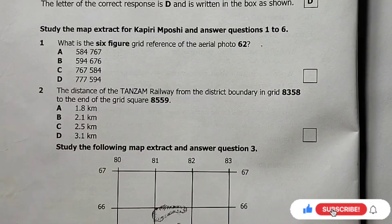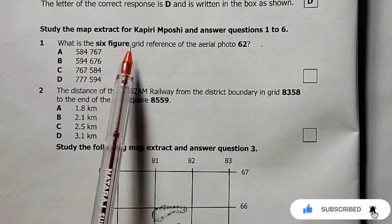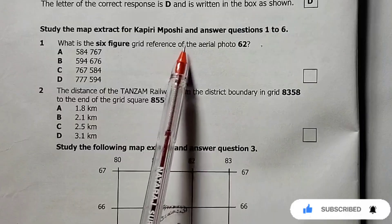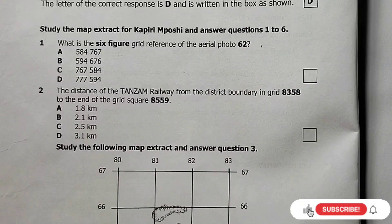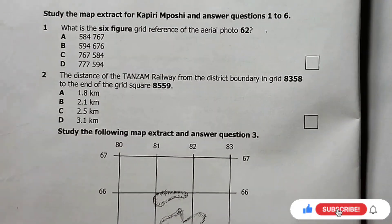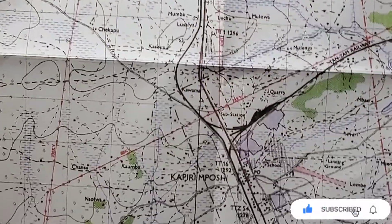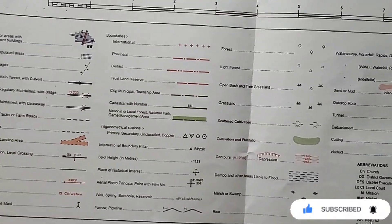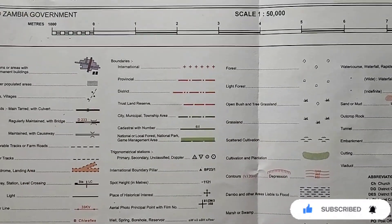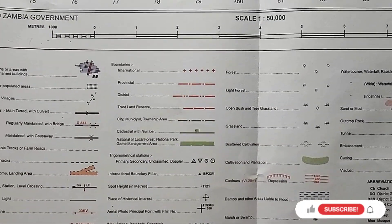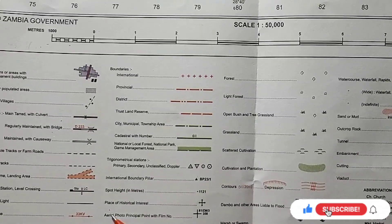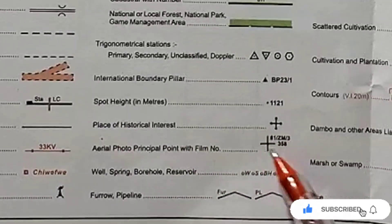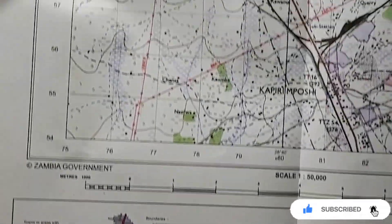We are going to use the first question here as an example. The question is asking: what is the six-figure grid reference of aerial photo 62? We are going to go on our map here — this is given in the exam. Let's go to the key here, as it is very important to understand what we are being asked. Here is the aerial photo symbol — it is this cross here.